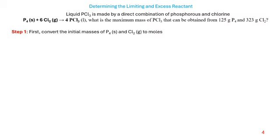Let's assume that we want to produce a liquid phosphorus chloride by a direct combination of phosphorus and chlorine. The question asks: what is the maximum mass of phosphorus chloride that can be obtained from 1.25 grams of phosphorus and 3.3 grams of chlorine?